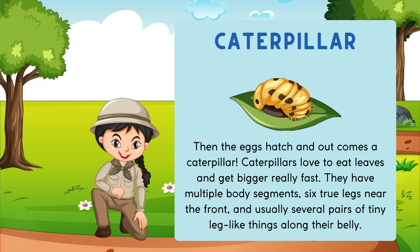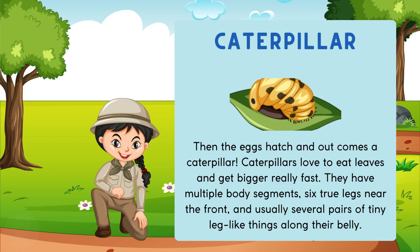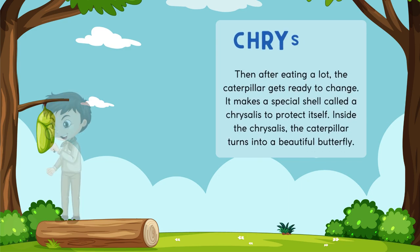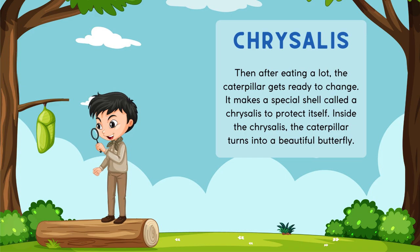What is this? It's a caterpillar — you all know it from the book 'The Very Hungry Caterpillar'! So the eggs hatch and out comes a caterpillar. Caterpillars love to eat leaves and get bigger really fast. They have multiple body segments, six true legs near the front, and usually several pairs of tiny leg-like things along their belly. Now what's that hanging on the branch of the tree?